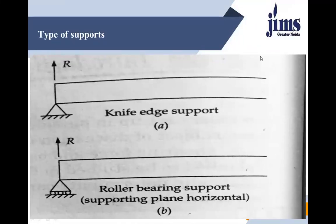First, we will talk about the types of supports. The first type is simply support. We simply put something on a support — like placing a beam on a column without tying or making any fixed connection between the beam and column. That is a simply supported condition.